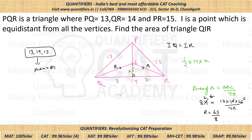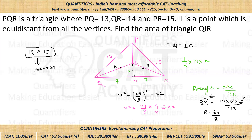Now applying the Pythagorean theorem: x² = R² − 7² = (65/8)² − 7². Using the difference of squares formula (a² − b² = (a+b)(a−b)): x² = (65/8 + 7)(65/8 − 7) = (121/8)(9/8). Since 121 = 11² and 9 = 3², we get x = (11 × 3) / 8 = 33/8.